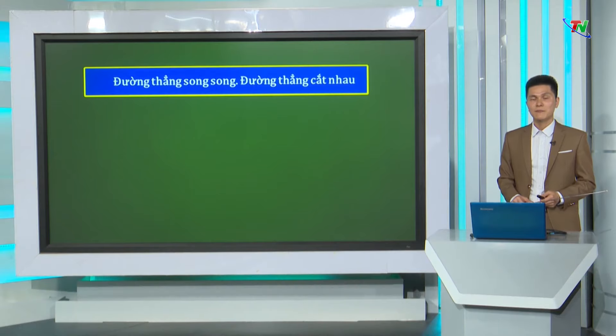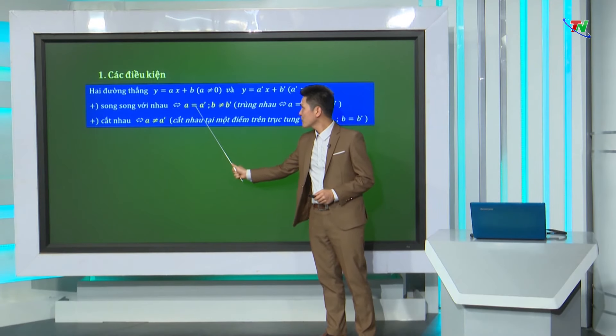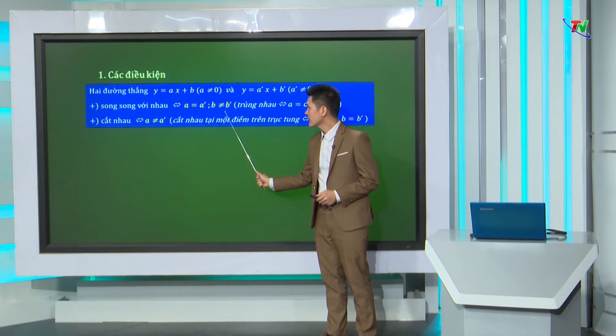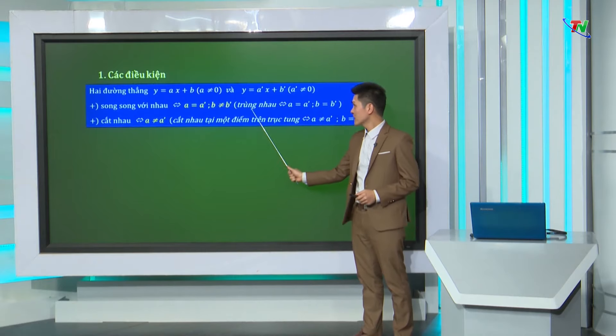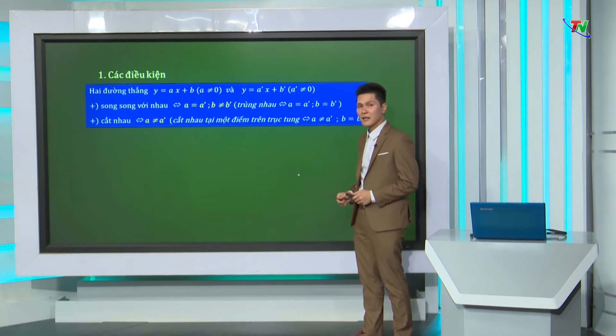Sau đây, thầy cùng các em ôn tập phần 2: đường thẳng song song, đường thẳng cắt nhau. Như các em đã biết, 2 đường thẳng Y bằng AX cộng B (điều kiện A khác 0) và Y bằng A'X cộng B' (điều kiện A' khác 0) song song với nhau khi và chỉ khi A bằng A', B khác B'. Đặc biệt, chúng trùng nhau khi và chỉ khi A bằng A', B bằng B'. Hai đường thẳng cắt nhau khi và chỉ khi A khác A'.